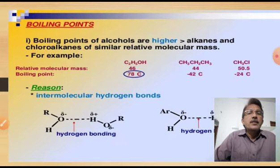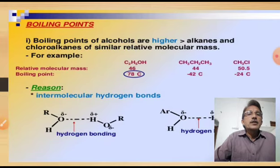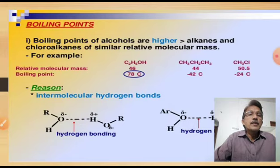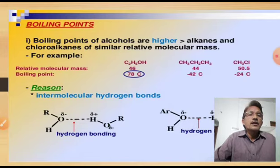Boiling points of alcohols are higher than corresponding alkanes and chloroalkanes of similar relative molecular mass. This is because in alcohol, molecules are held by intermolecular hydrogen bonds. Due to the presence of intermolecular hydrogen bonds, alcohols possess higher boiling points, whereas alkanes and chloroalkanes do not have intermolecular hydrogen bonds, so their boiling points are comparatively much lower.